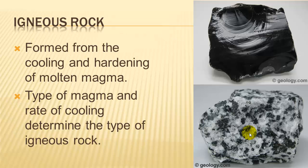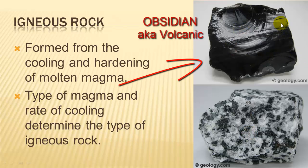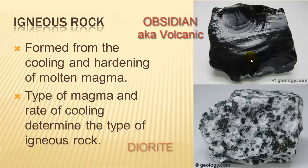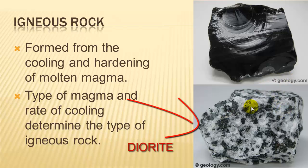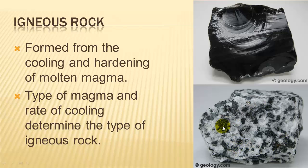Igneous rock is formed from the cooling and hardening of molten magma. The type of magma and how fast it cools change the type of rocks that form. For example, this is obsidian or volcanic glass — you can't see any crystals in it because it cooled very, very fast. On the other hand, here is another igneous rock where you can see the crystals, meaning it cooled much more slowly and gave time for those crystals to form.